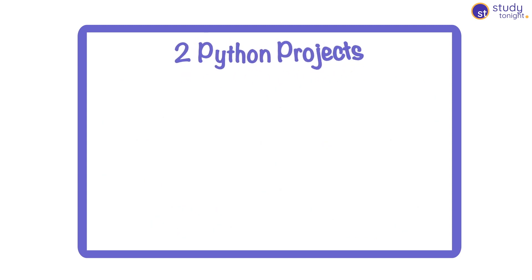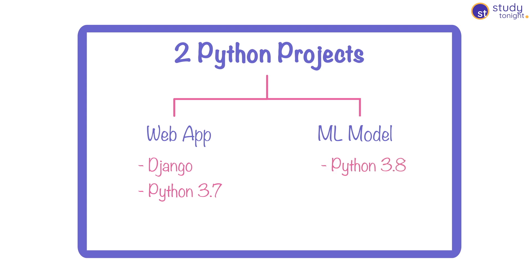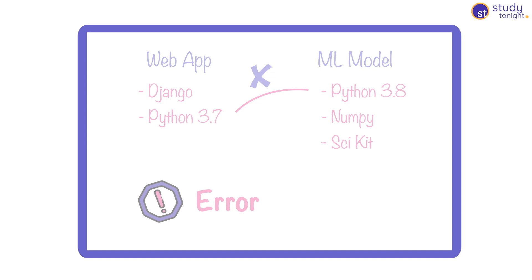For example, if you're working on two Python projects side by side — one is a web application using the Django framework that uses Python 3.7, and the other is an ML model script using Python 3.8 with NumPy and scikit-learn — because the Python version requirements are different, you'd need both versions on your local machine along with different modules. Having two versions of the same programming language can lead to errors and complications.